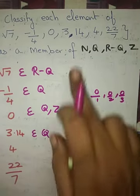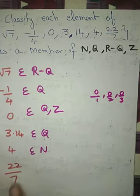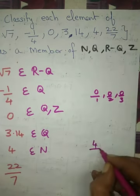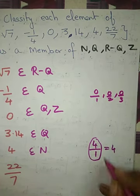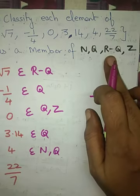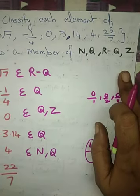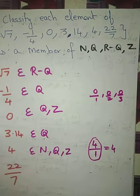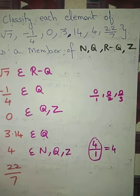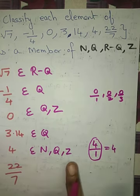Next, 4. Is it a natural number? Yes — all numbers starting from 1 are natural numbers. Is it a rational number? Yes — 4 can be written as 4 by 1, which is in the form of a fraction. Is it irrational? No, there is no root. Is it an integer? Yes — integers include ..., minus 1, 0, 1, 2, 3, 4 and so on. So 4 is a natural number, a rational number, and an integer.